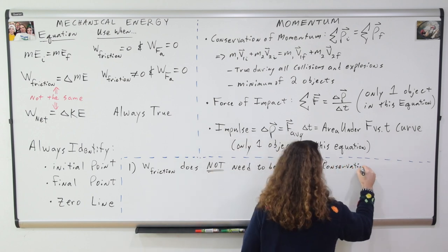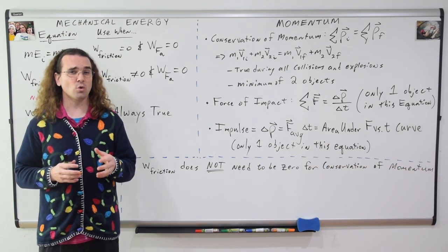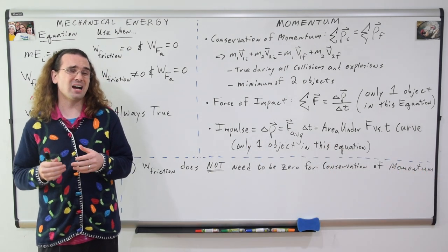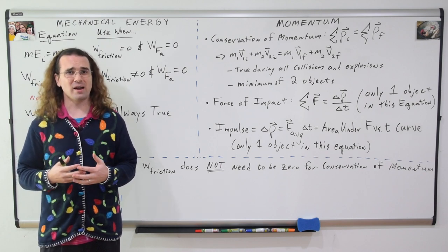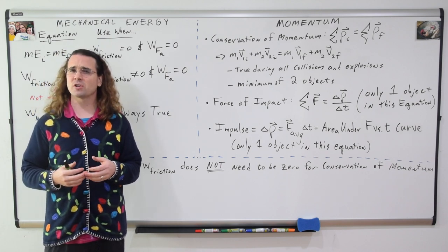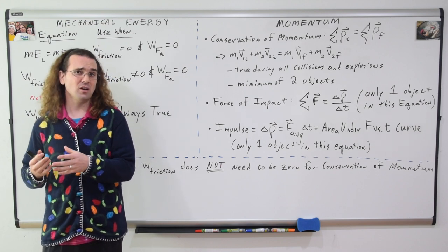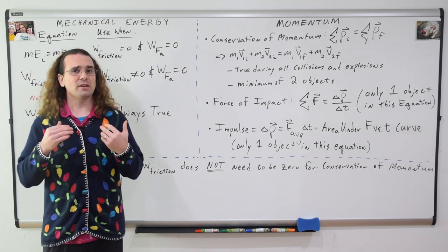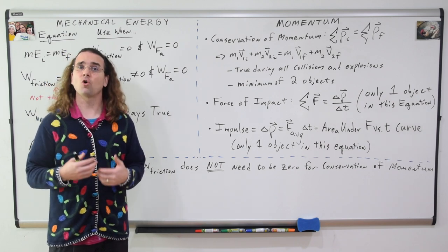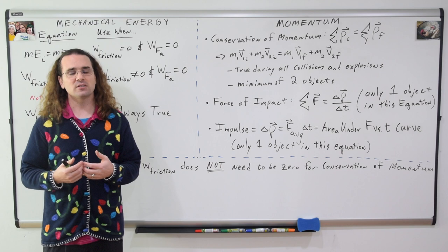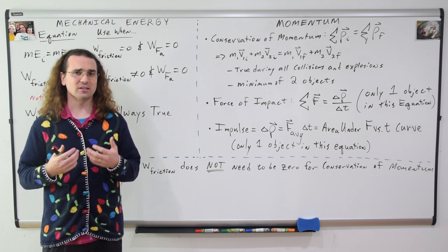Students often tell me that the work due to friction must be equal to zero for conservation of momentum to be true. But this is not correct. And it's probably because students are confusing conservation of energy with conservation of momentum. Conservation of momentum is true when all the forces are internal or balanced. And we translate this to mean during all collisions and explosions.